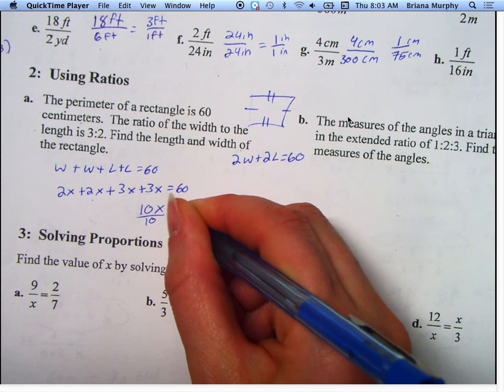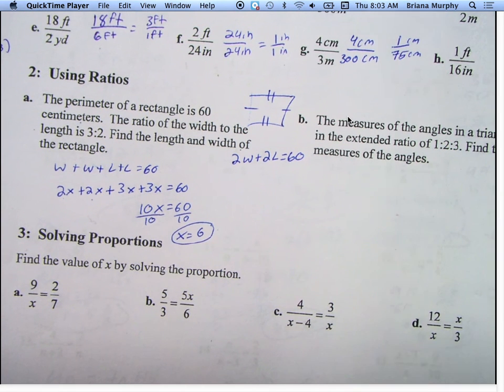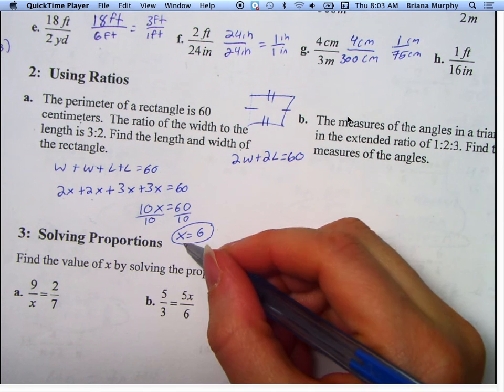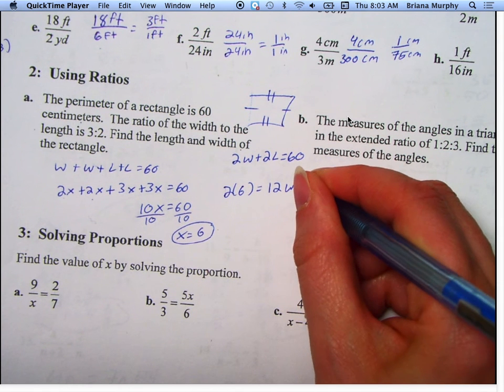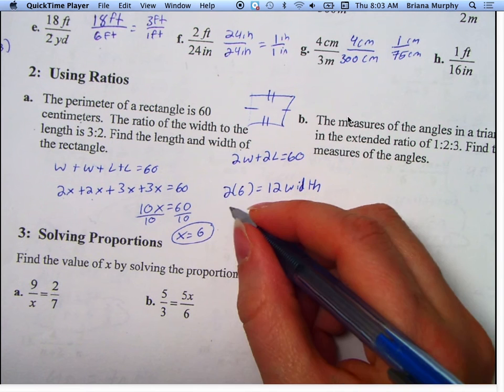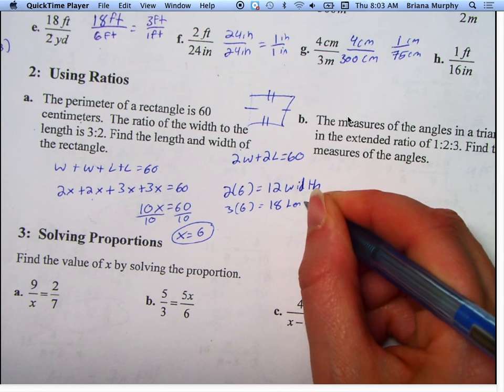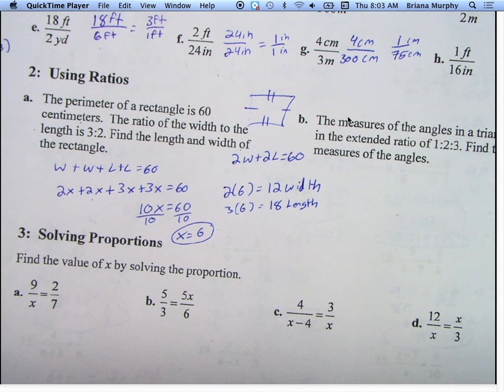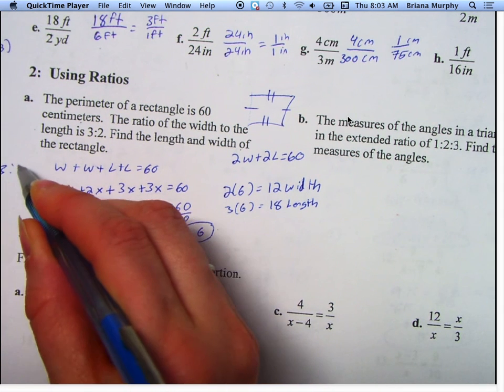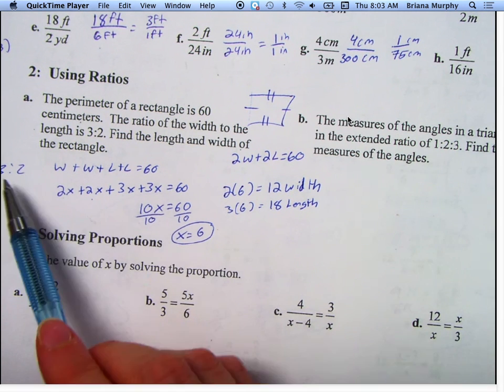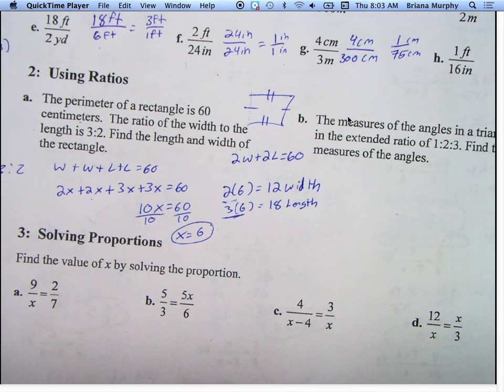We can combine like terms - 2 plus 2 is 4 plus 6 more, we get 10x equals 60. Divide by 10, so my x is 6. So we've got to go 2 times 6 equals 12, so that's my width. And then 3 times 6 equals 18, so that's my length.